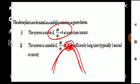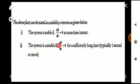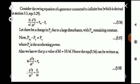The next condition is: the system is unstable if d delta by dt is greater than zero for a sufficiently long time. We consider one second as the reference — if d delta by dt remains greater than zero beyond one second, the system is unstable.